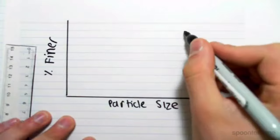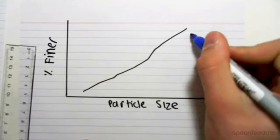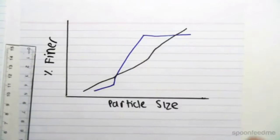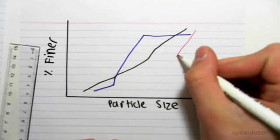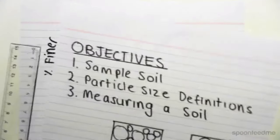And it looks maybe something like this. And we could get all different curves, so we could get a curve like that, we could get a curve like this.